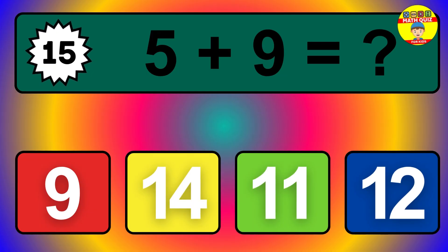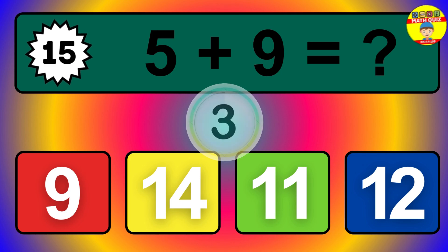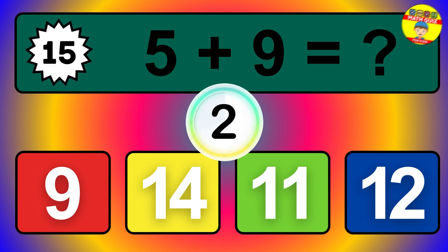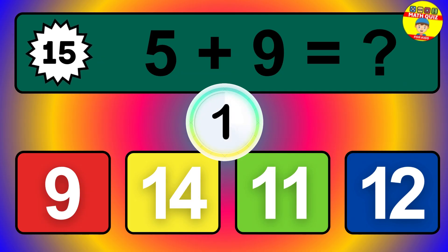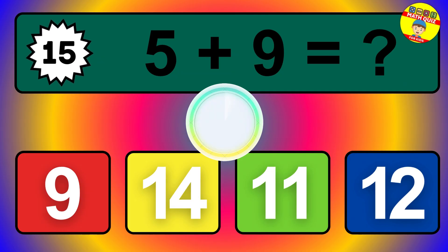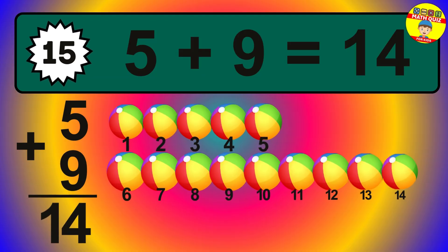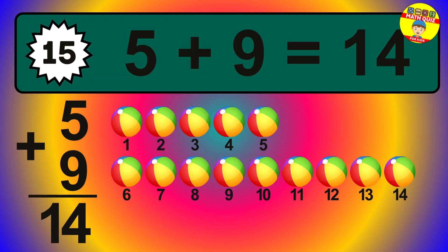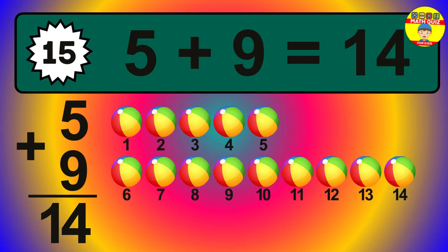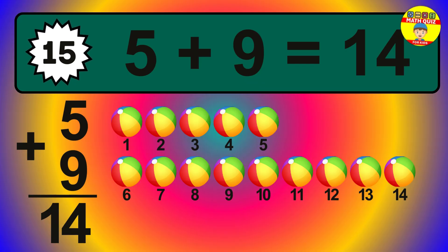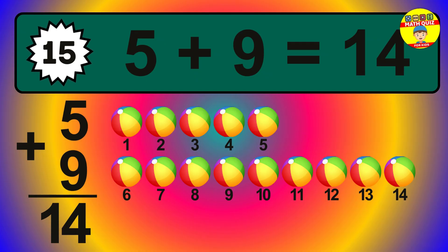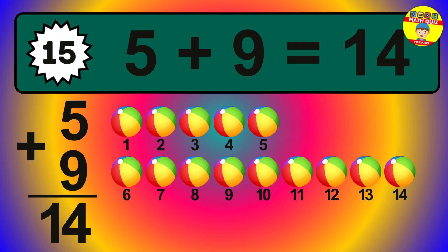Question 15. 5 plus 9 equals what? So the answer is 5 plus 9 is 14. Let's count it: 1, 2, 3, 4, 5, 6, 7, 8, 9, 10, 11, 12, 13, 14.